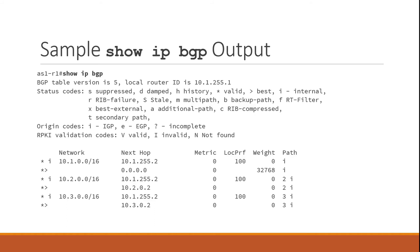Notice that the eBGP routes do not have a local preference, because local preference is only advertised inside an autonomous system — you won't see it advertised between autonomous systems. In this example, we are using the default behavior and not setting MED at all. The default value when MED is not set is zero, which is the lowest and therefore most preferred value possible.